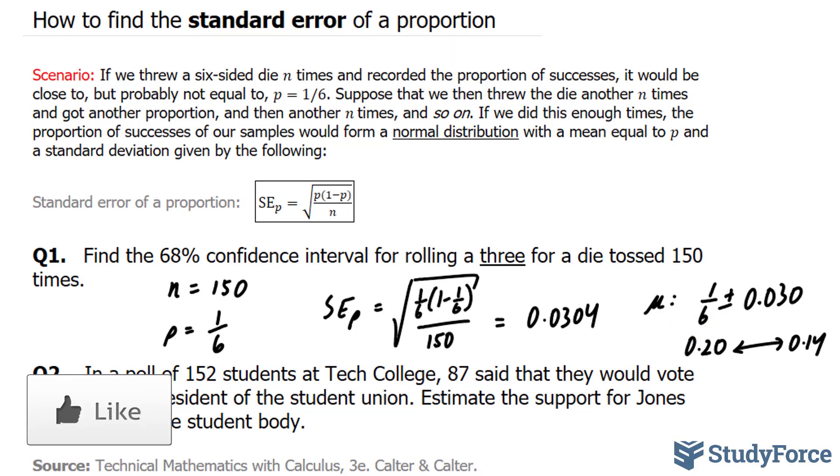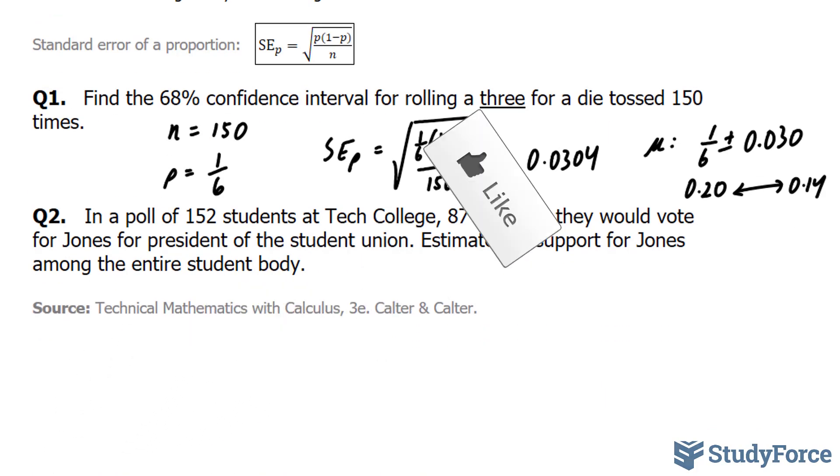Let's do a similar problem now in question 2. In a poll of 152 students at Tech College, 87 students said that they would vote for Jones for president of the student union. So if you relate this back to question 1, this would be our p-value. Estimate the support for Jones among the entire student body.